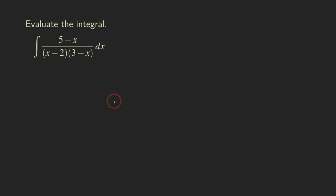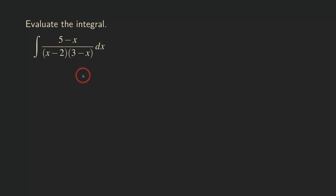Hello everyone, it's Wilson here. Today I want to talk about integrating this rational function. This is a rational function and its denominator has already been factored. What we need to do is rewrite this rational function as a sum or difference of two or more rational functions so that we can integrate each partial fraction directly. The way that we do this is called the partial fraction decomposition.